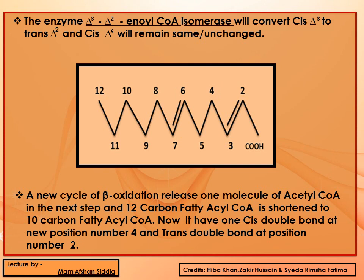A new cycle of beta oxidation releases one more acetyl-CoA, and the 12-carbon fatty acyl-CoA is shortened to 10 carbons. It now has a cis double bond at position 4 and a trans double bond at the new carbon 2 position.